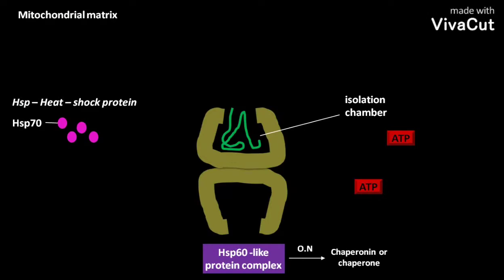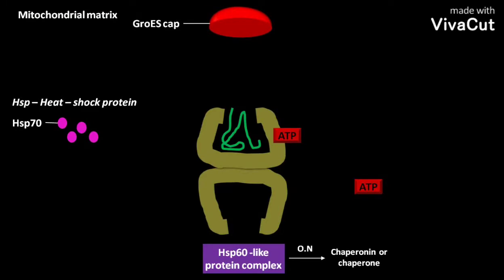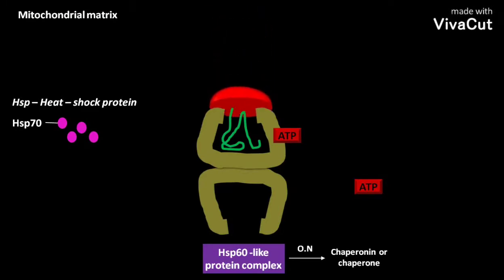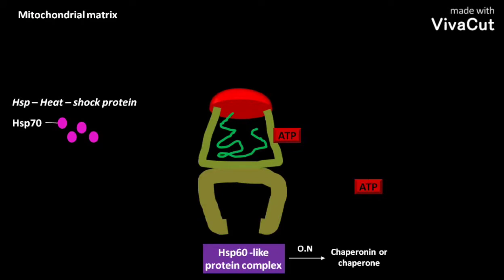ATP then binds to the barrel, followed by the GroES cap. Due to the binding of ATP and the GroES cap, the diameter of the barrel rim increases, which stretches the client protein. The binding of ATP and GroES cap also provides an enclosed space where the client protein folds again.